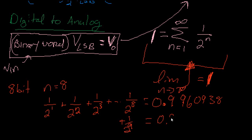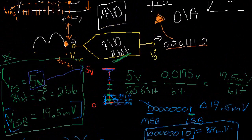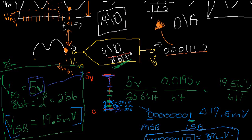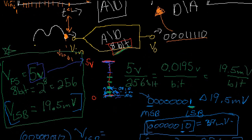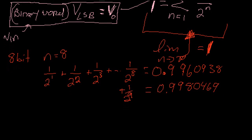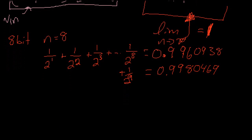We're getting 0.99804, so you can see it's getting closer and closer to 1 with every term that we add in. The more bits of information you have to represent your signal, the more accuracy you're going to have. What you can do here is apply this power series to also do our digital-to-analog conversion.